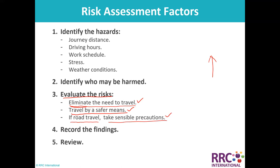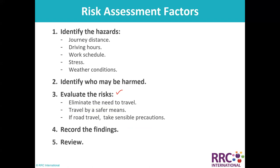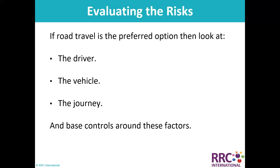Record the significant findings of what you have done and how you will implement controls, then review. When evaluating the risk, if road travel is the preferred option, we assess three dimensions: the driver, the vehicle, and the journey. We must identify and control all hazards related to each of these three categories.